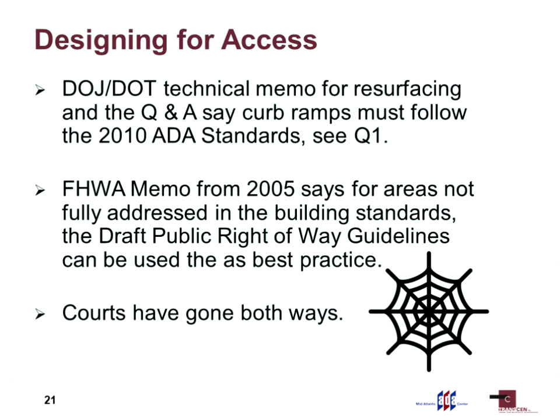Federal Highway gives you flexibility to use whatever information is available to make your pedestrian facilities accessible. That could be the proposed public right-of-way guidelines, the AASHTO guidelines for pedestrian facilities, AASHTO's bike book guidance on shared use paths — AASHTO is the American Association of State Highway Transportation Organizations — or NACTO, the National Association of City and Towns, which also discusses pedestrian facilities. You have flexibility and don't have to use the public right-of-way guidelines, but they've evolved from the Access Board over time, so we'll talk about them mainly.